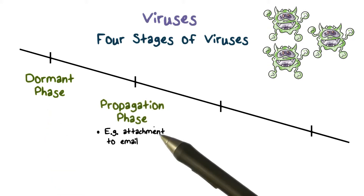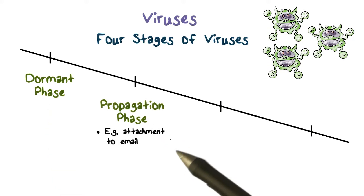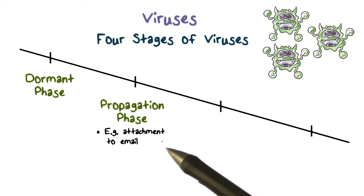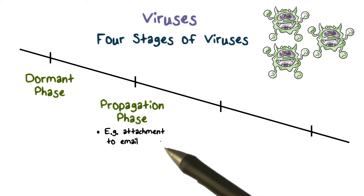The second stage is propagation. This is when the malware is being sent around or spread. For example, the malware can come as an email attachment, and the email attachment is being sent to many users.